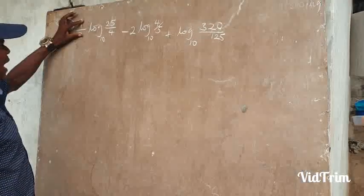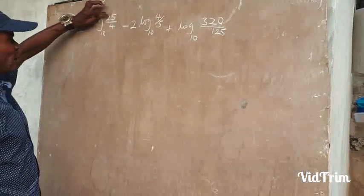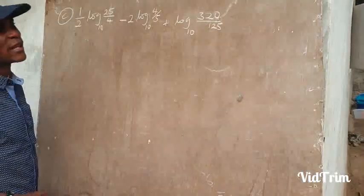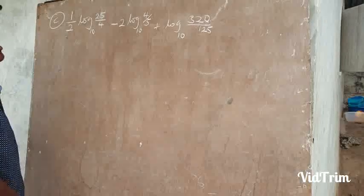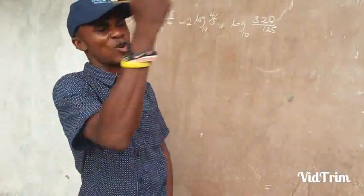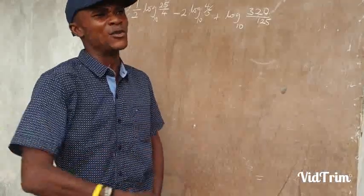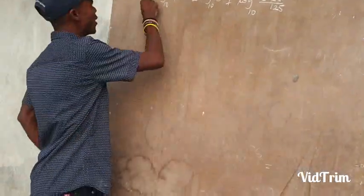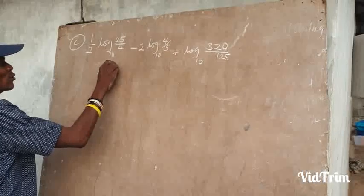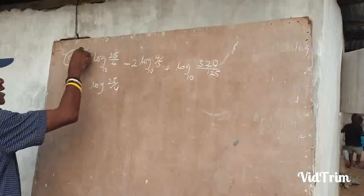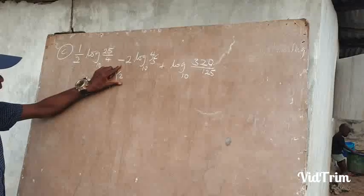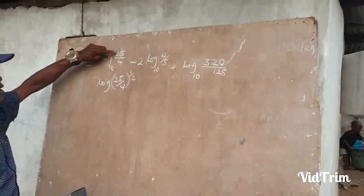The third question reads: half of log(25/4) base 10, minus 2 log(4/5) base 10, plus log(320/125) base 10. The theory says when there is a power, you bring it down; and if something is down in front, you raise it up. Since we are seeing figures in front, that means they were powers. We have log of 25 over 4, both raised to the power of 1/2.